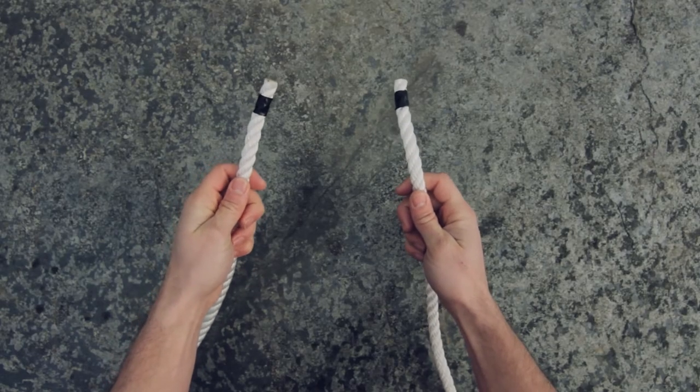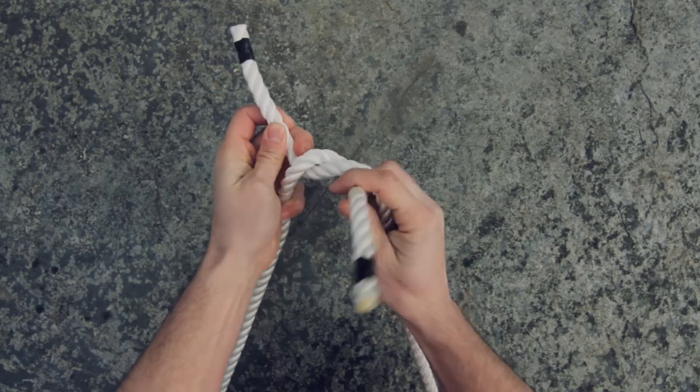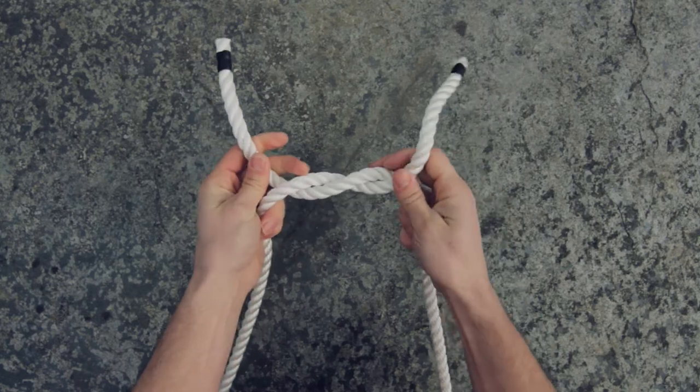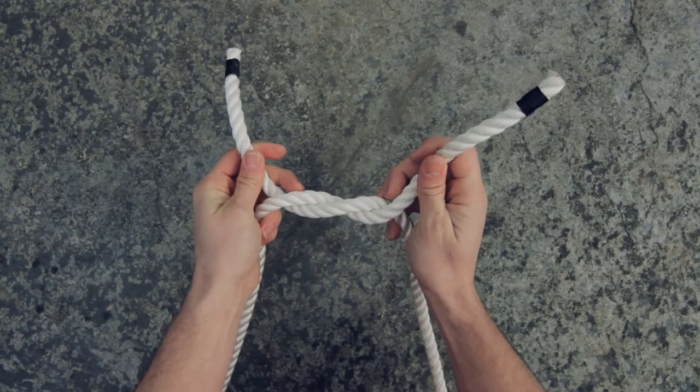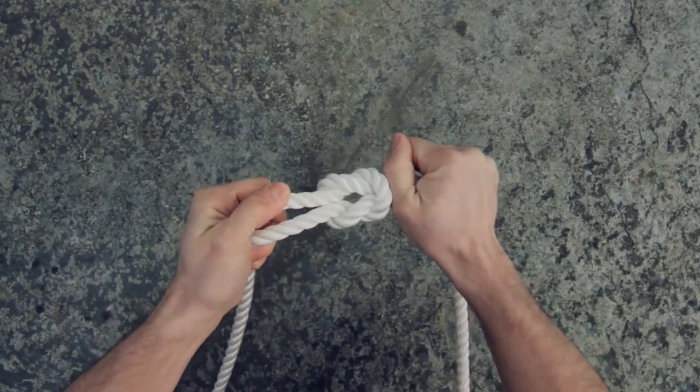With two ends of rope, one in each hand, cross the left over and around the right to form what is known as a half knot. Then cross the right end over and around the left and pull the standing ends away from each other to tighten.